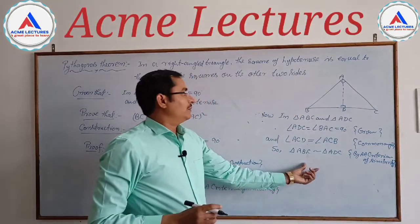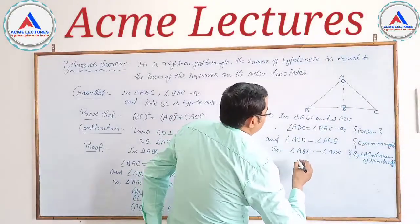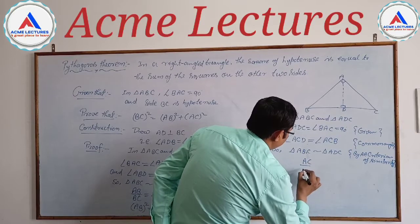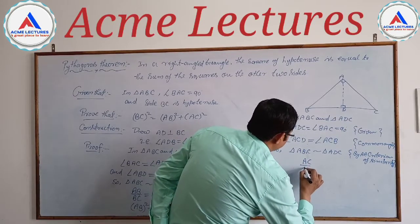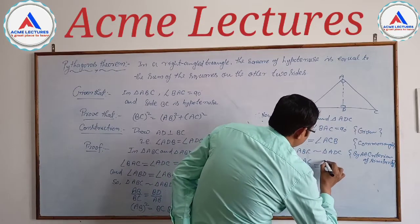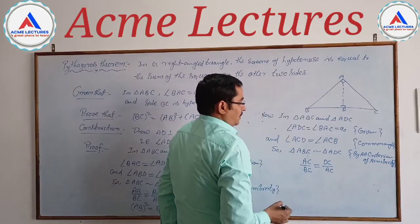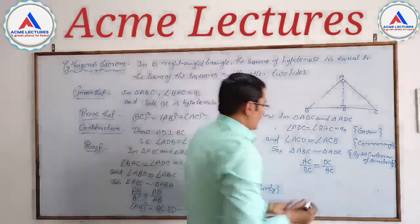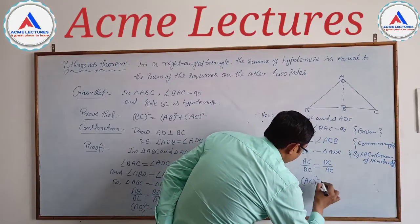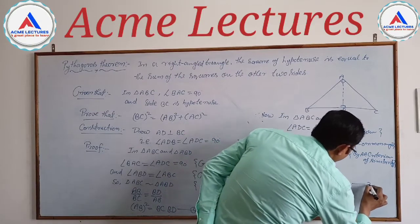Since these two triangles are similar, we get side AC upon BC equals DC upon AC. Cross-multiplying, AC² = BC × DC. This is equation two.